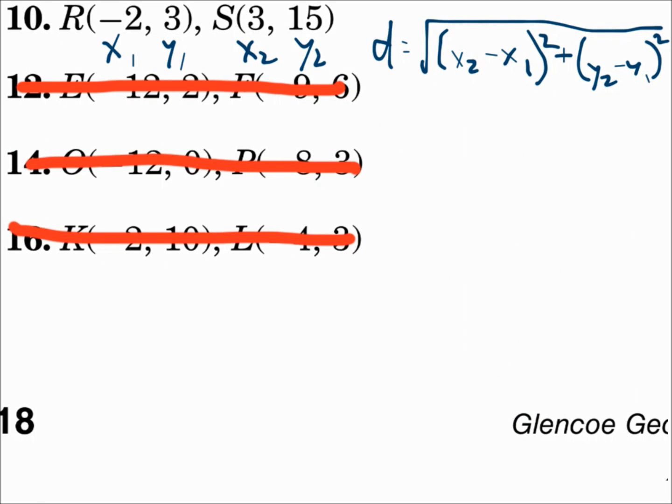For number 10, (-2, 3) is your x₁, y₁. (3, 15) is your x₂, y₂. So, we will substitute the values in where they go. x₂, x₂ minus x₁, and y₂ minus y₁.